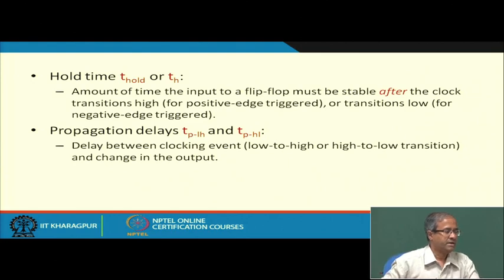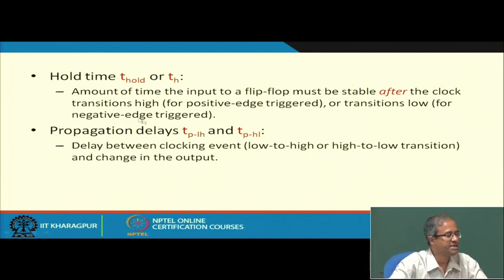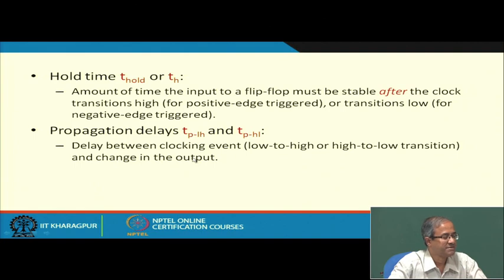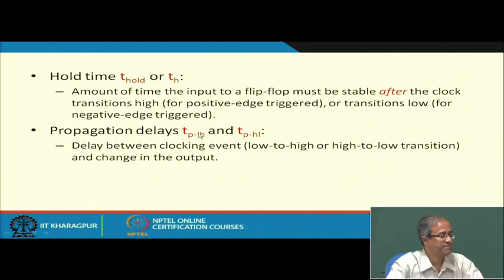The last timing parameter is propagation delay. Propagation delay means, starting from the clock edge, how much time is required for the output to change. The output here means not just the flip-flop output but the flip-flop plus the logic — the total delay. Starting from the clock edge, the maximum propagation delay after which the output becomes available can be either low-to-high or high-to-low, denoted T_pLH or T_pHL. This is the propagation delay.